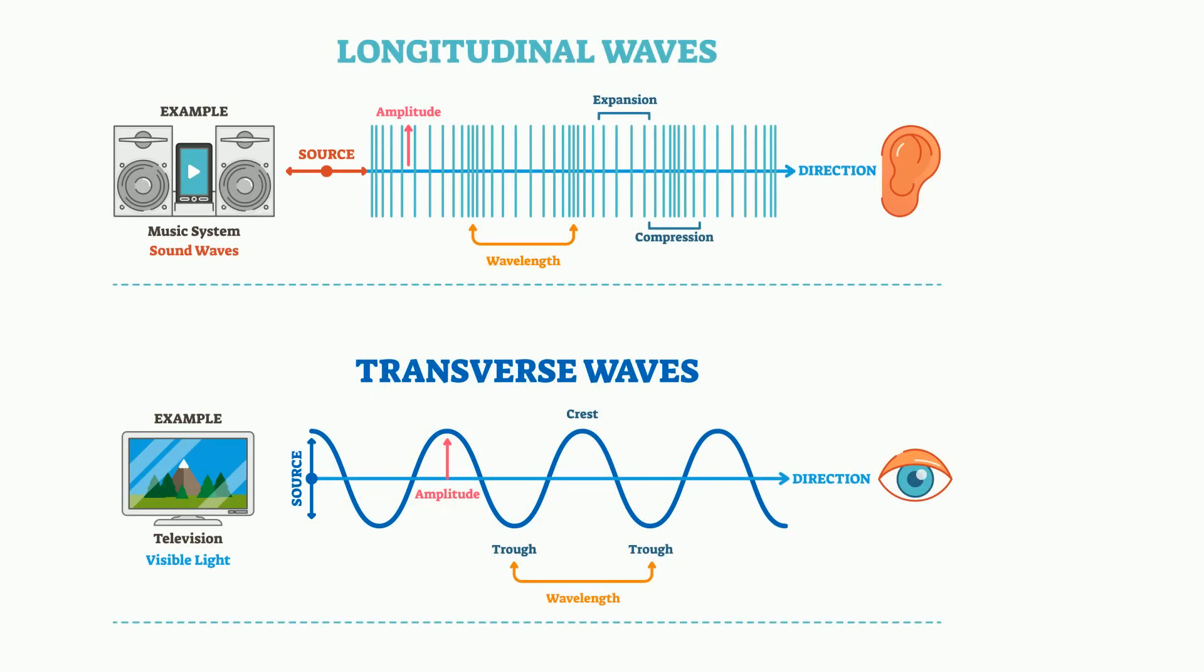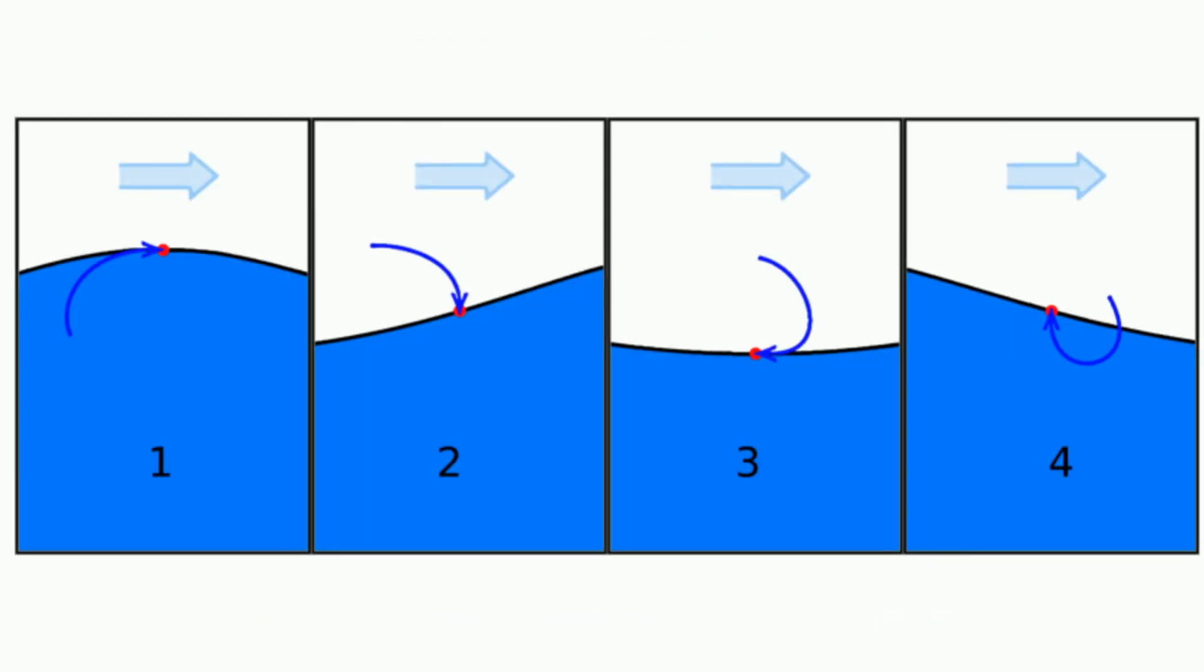In longitudinal waves, the particles move parallel to the disturbance. With transverse waves, the particles move perpendicular to the disturbance. In a surface wave, it is only the particles at the surface of the medium that undergo this circular motion.